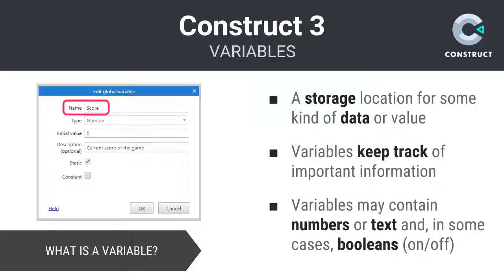Creating variables in Construct, as you might expect, follows the same point-and-click and complete-the-dialog process that you are already well familiar with. Variables should be given a unique, meaningful name, then assigned a type, initial value, and an optional description.